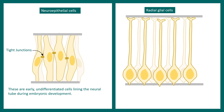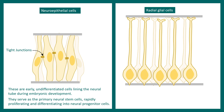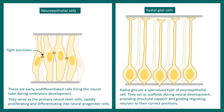Neuroepithelial cells are undifferentiated and they line the entire neural tube — they are stem cells in nature. Whereas radial glial cells are one type of specialized neuroepithelial cell. They also have stem cell-like properties, but they can divide either symmetrically or asymmetrically.